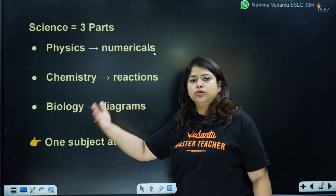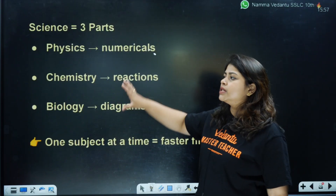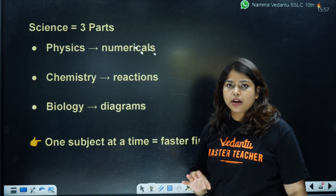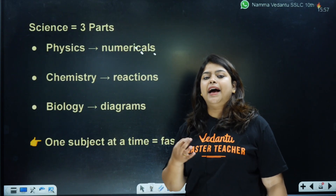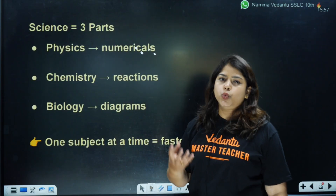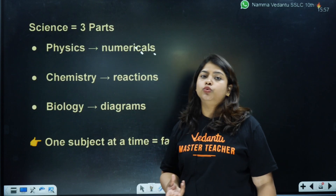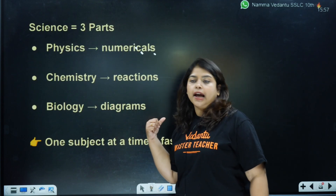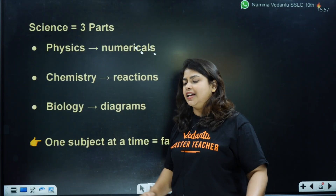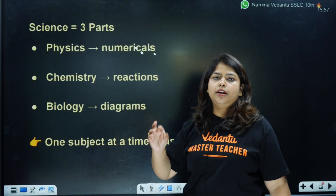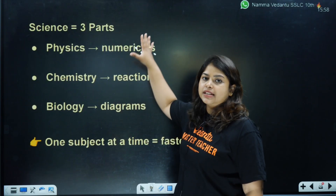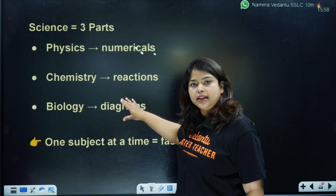You will not focus much on theory questions because numerical problems — most of the questions can be answered that way. Next, in chemistry, focus on reactions — chemical reactions are fixed. For example, balancing equations is fixed. There will also be applications and uses questions in chemistry. In biology, focus on diagrams — everyone should focus on diagrams to score. Three things are key: numericals, reactions, and biological diagrams.